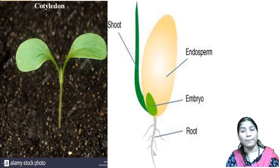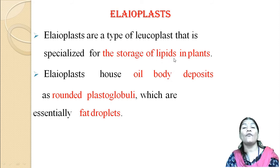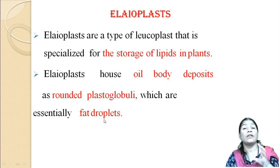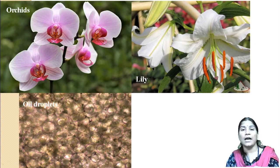Elaioplasts are also a type of leucoplast specialized for the storage of lipids in plants. They are the house of oil body deposits, which are rounded plastoglobuli, essentially called fat droplets. They are also formed in the form of fat droplets. For example, in orchids and lilies, the anther nodes are permanently attached and droop down because of the presence of oil droplets — this is the type of plastid called elaioplast.